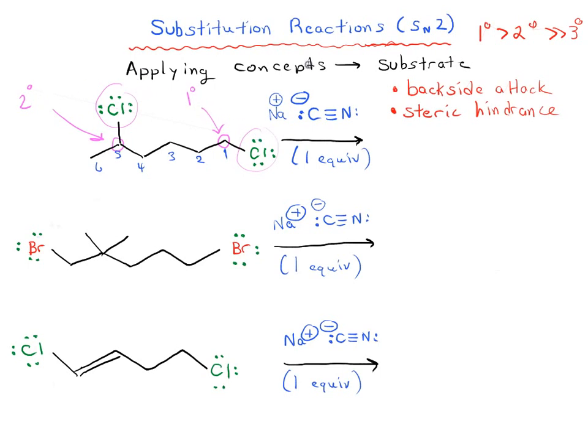Therefore, primary versus secondary, primary is going to be faster. So when we're drawing the mechanism of this reaction, the cyanide anion, the lone pair, is going to attack carbon 1 from the backside, and then we're going to displace the chloride ion. That's going to give us this product here.